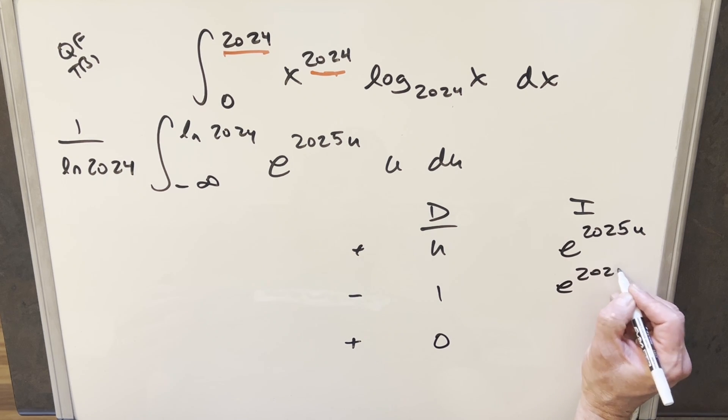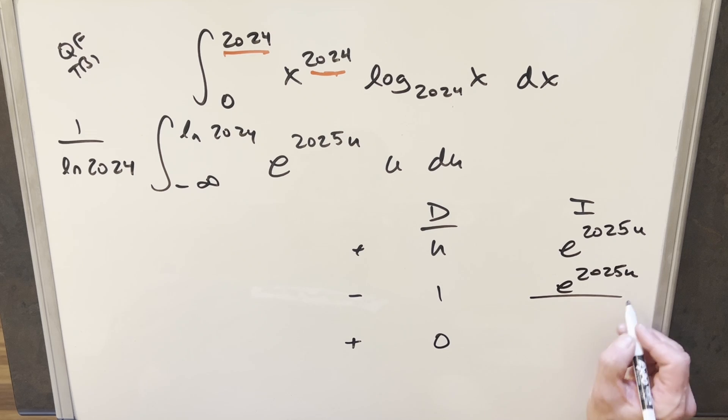And then here when we integrate this, we're going to have the same thing back. But we need to bring out 2025 in the denominator. And then doing it again, same thing is going to happen where we bring out another 2025. So now we're going to have 2025 squared.